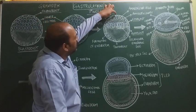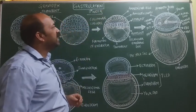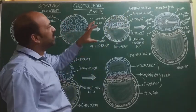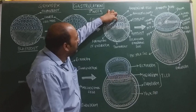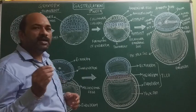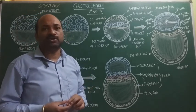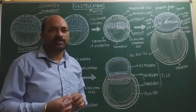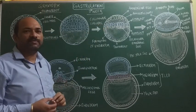The trophoblast cells divide and differentiate to form cells called amniogenic cells. These amniogenic cells are responsible for forming a space between the epiblast and the amniogenic cells, called the amniotic cavity. This amniotic cavity contains amniotic fluid, which mainly acts as a shock absorber, preventing pressure from reaching the fetus.